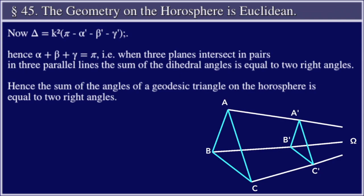When three planes intersect in pairs in three parallel lines, the sum of the dihedral angles is equal to two right angles. Hence the sum of the angles of a geodesic triangle on the horosphere is equal to two right angles.